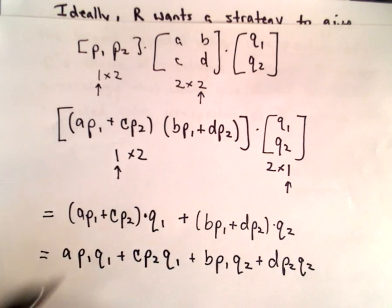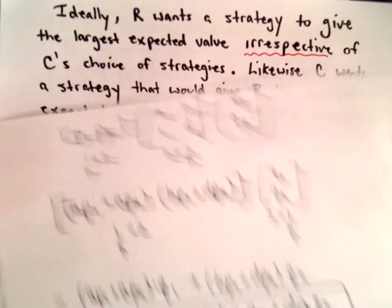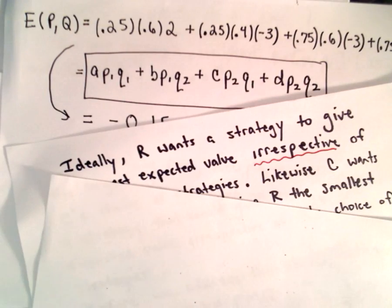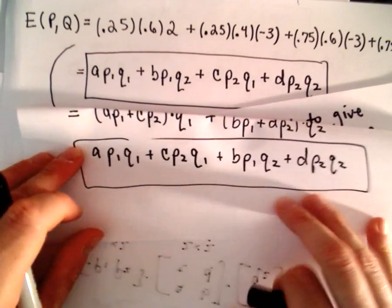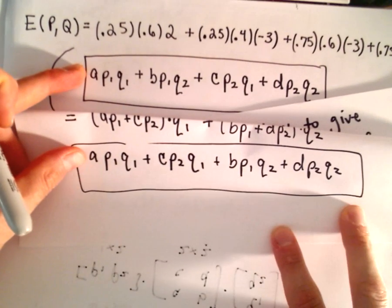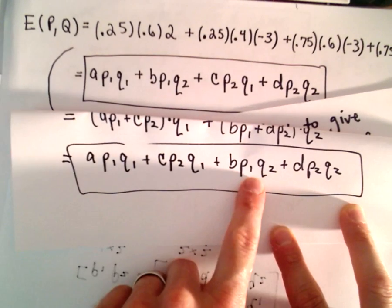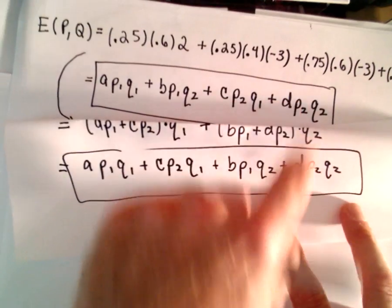We've got BP1 times Q2 plus D times P2 times Q2. And I'm not going to reorder these. You certainly could. But basically, I just want to show you that you do in fact get the exact same thing that we had before. The same first terms are there. There's our CP2Q1 term, the term involving B, and then the term involving D.